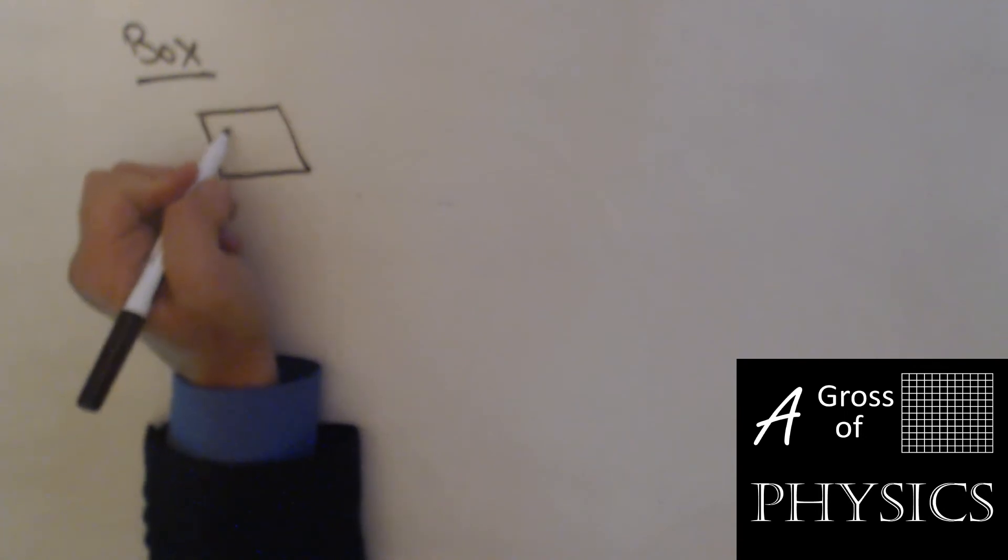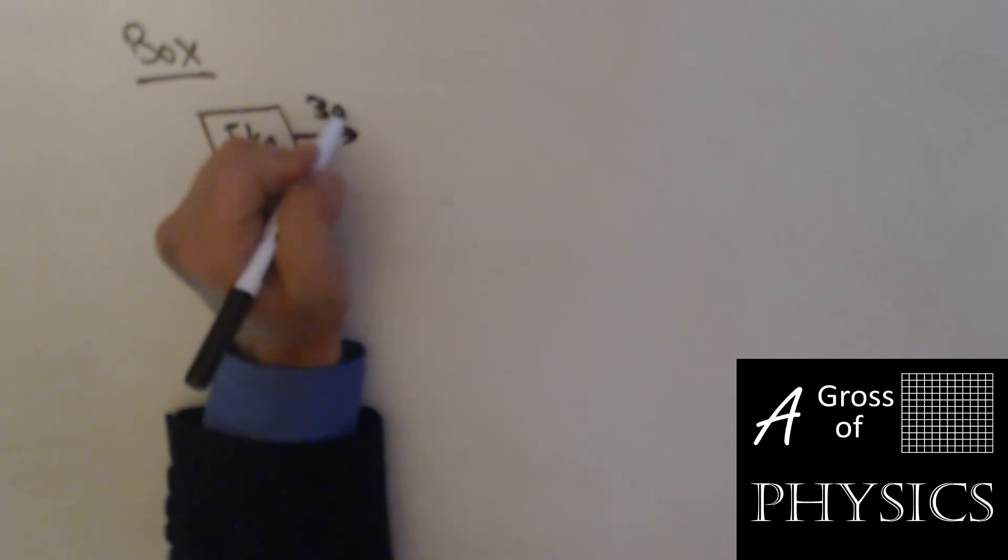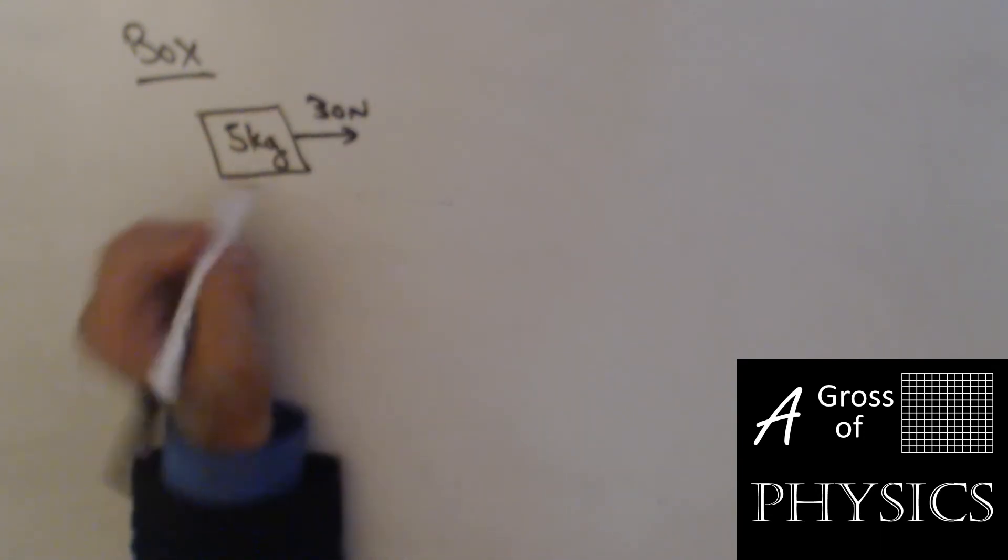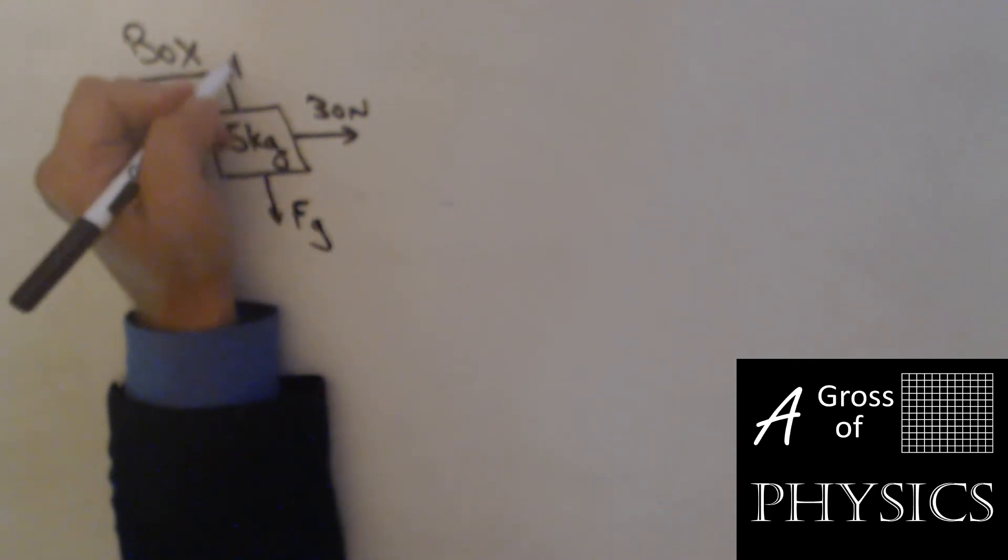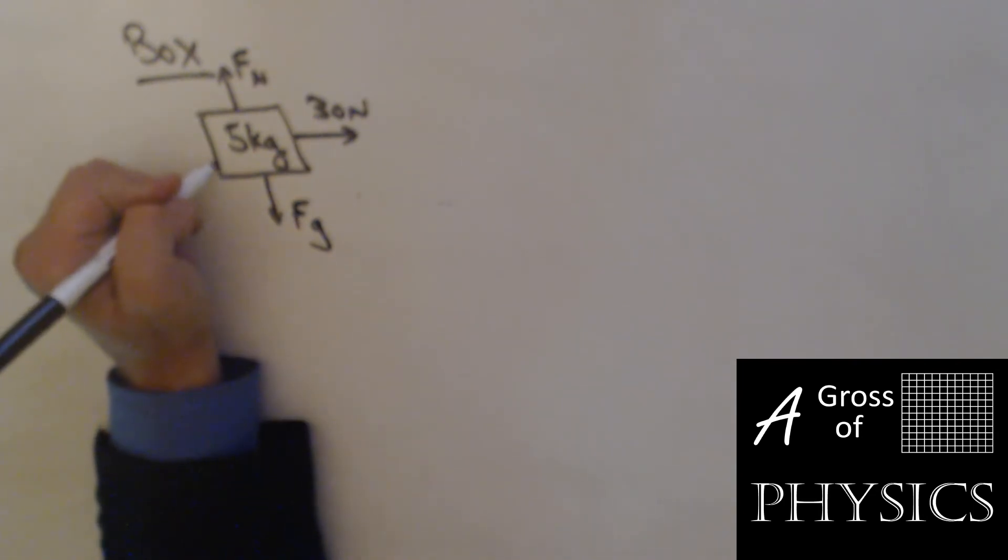For this problem, we're going to have a box that we're going to push sideways. We have five kilograms in the box. We're pushing it with 30 newtons. There's gravity acting downward, a normal force going up. And because it mentioned that the box is made of steel and the table is made of steel, that's going to imply that there's friction.